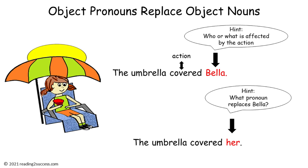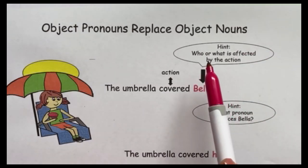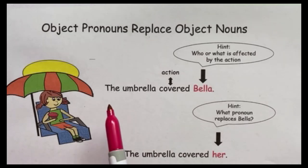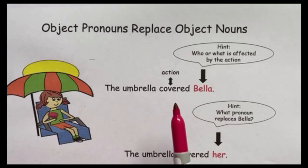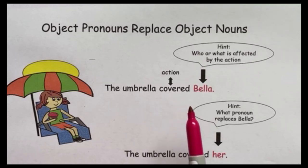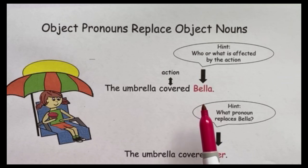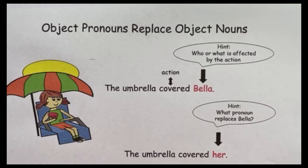Before having kids start the practice page for object pronouns, review this template. Object pronouns replace object nouns. The hint: who or what is affected by the action? Read the sentence: The umbrella covered Bella. The verb is 'covered' and it is the action — Bella is affected by it, shaded from the sun. So Bella is our object noun. What pronoun replaces Bella? The answer is 'her.' The umbrella covered her.